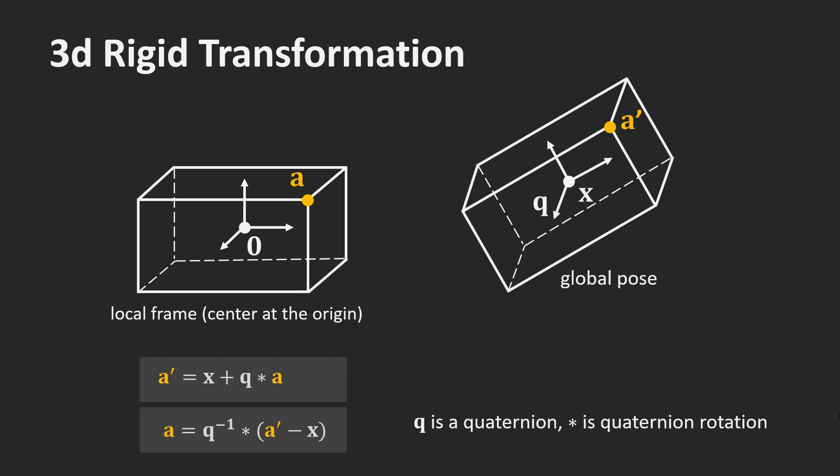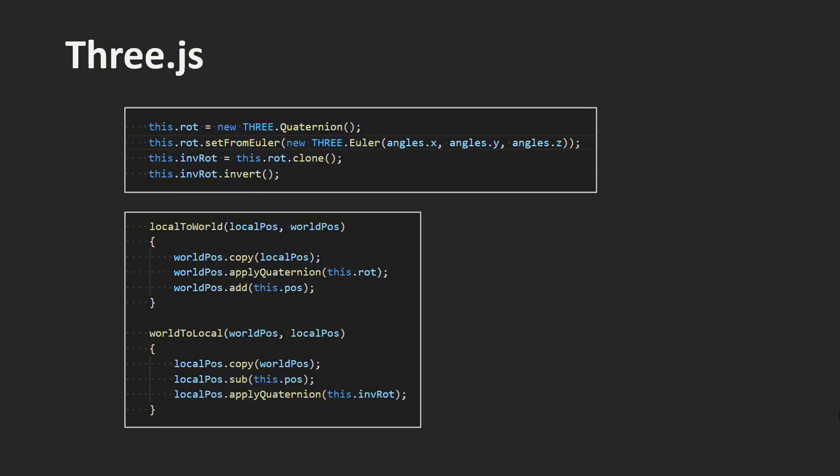In these equations, q is a quaternion and the star is the operation that rotates a vector using the quaternion. Fortunately, you don't have to know the math of quaternions because virtually all simulation frameworks provide a quaternion class. We use three.js as in many previous tutorials. Here is my implementation. In the constructor of the rigidbody class, I define a member variable rot of the type quaternion and its inverse. The rigidbody provides two methods: one to go from local to global coordinates and one to go from global back to local coordinates. As you can see, their implementations are quite simple and straightforward.